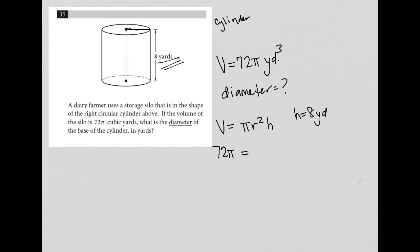So 72π = πr² × 8, replacing h with the height. Simplifying gives 72π = 8πr². I'll divide both sides by 8π to solve for the missing variable r.